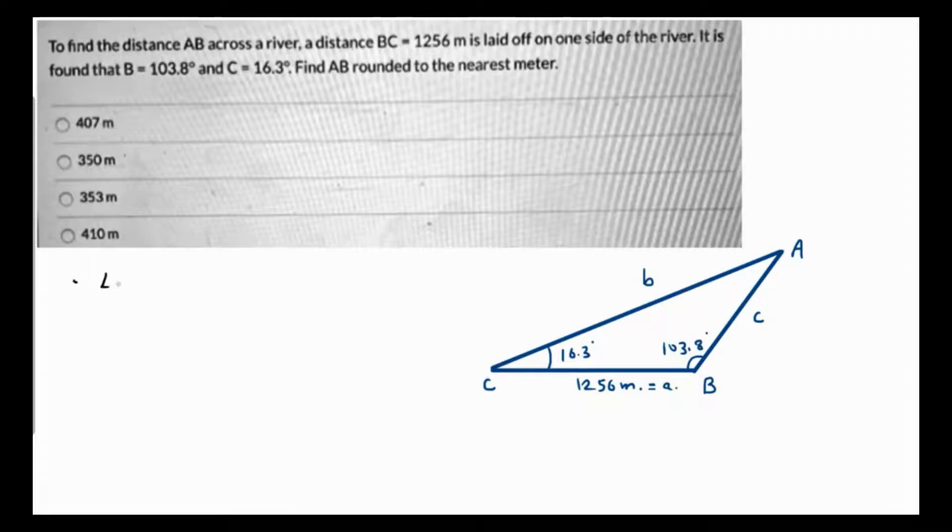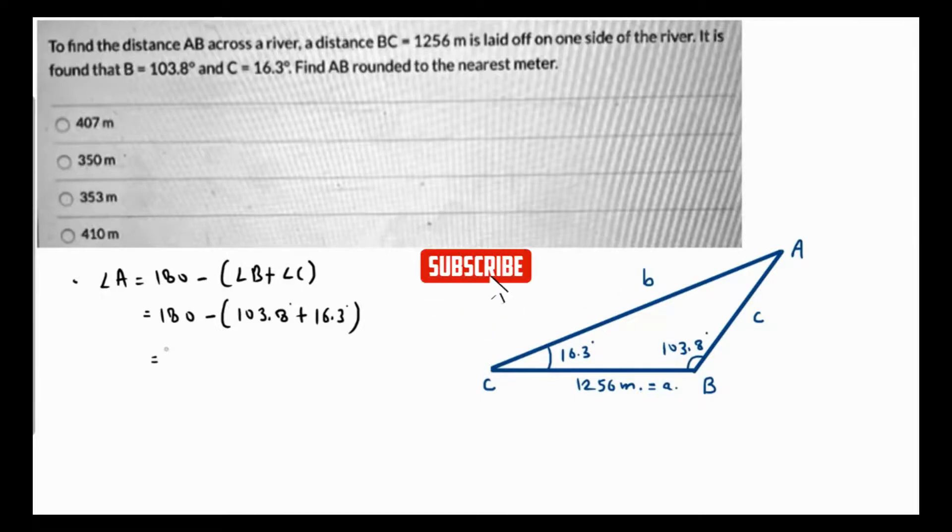Angle A is going to be 180 minus angle B plus angle C. So this will be 180 minus angle B which is 103.8 plus angle C which is 16.3. This is going to be equal to 103.8 plus 16.3, and 180 minus this value is 59.9 degrees.